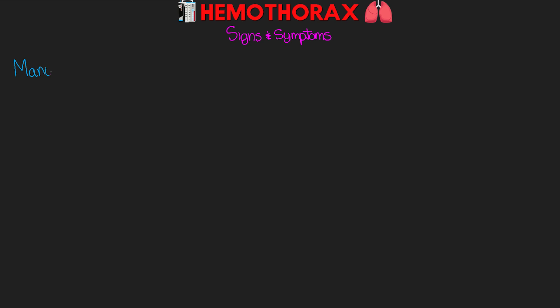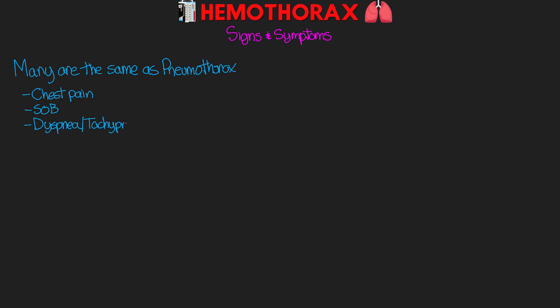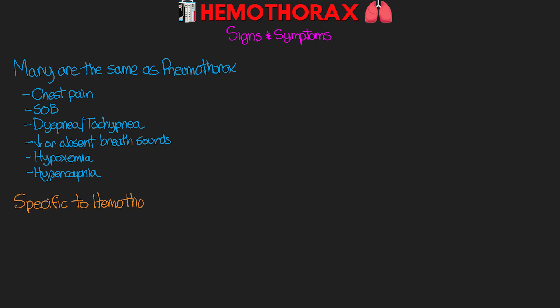Many of the signs and symptoms of a hemothorax are going to be the same as we see with a pneumothorax — chest pain, shortness of breath, dyspnea or tachypnea, decreased or absent breath sounds, hypoxemia, and hypercapnia. Some signs and symptoms more specific to hemothorax versus pneumothorax would be tachycardia. This is again going to be a result of compensation from blood loss, but isn't necessarily indicative of tension because we can have tachycardia just from blood loss alone.